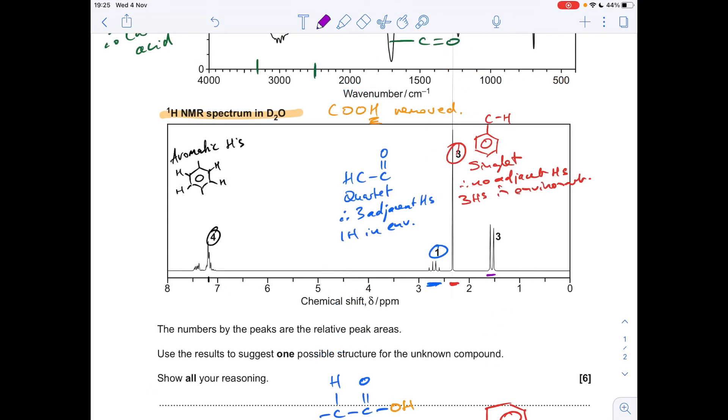OK, so we'll just finish off with this peak here. This is at just over 1.5. So this is your kind of bog-standard HCR environment. It's a doublet, so we'll get the key word in. Therefore, it's adjacent to one proton, and the area is three, so there are three hydrogens in the environment.